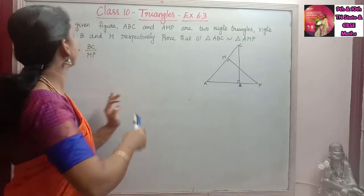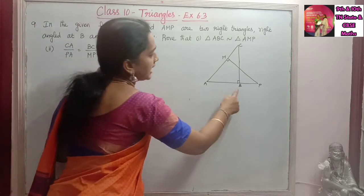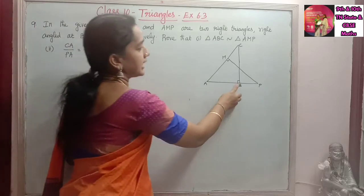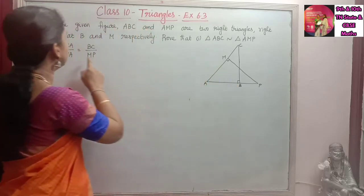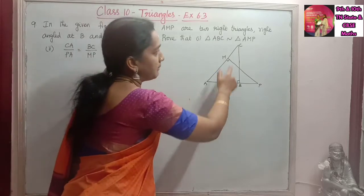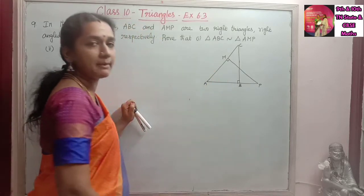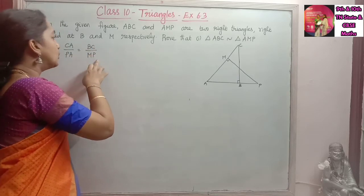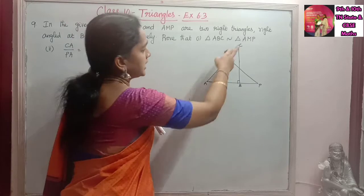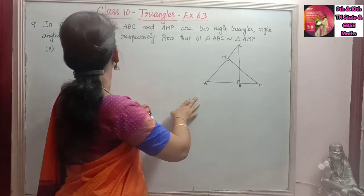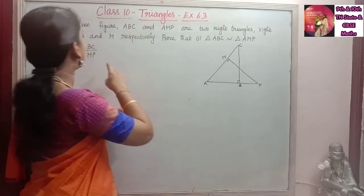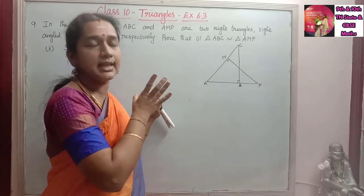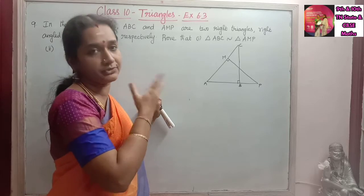Then the 9th sum: In the given figure, ABC and AMP are two right triangles, right angled at B and M respectively. Prove that triangle ABC and triangle AMP are similar, and that CA by PA is equal to BC by MP. So CA, PA, BC, and MP are the sides of the given two triangles, and we need to show the proportionality of these sides.